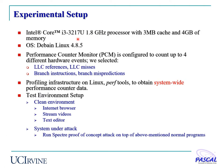The machine used in our experiment is a typical laptop computer with an Intel Core i3 processor running Linux. We configure the performance counter monitor to track cache-related and branch-related features, and use the built-in Linux perf tool to obtain system-wide performance counter data. During clean environment runs, we run different browsers, streaming videos, and text editor applications. When the system is under attack, we run the Spectre proof-of-concept attack on top of these normal programs.